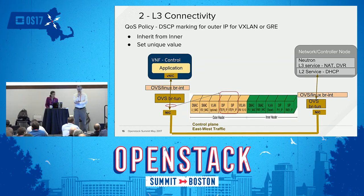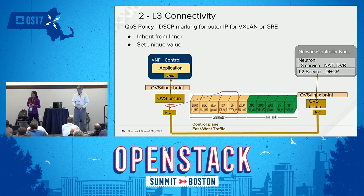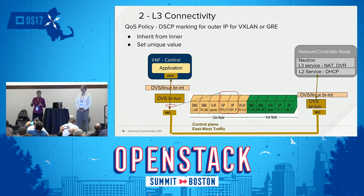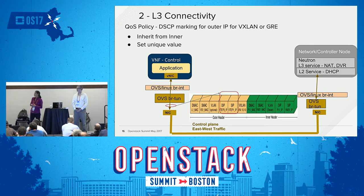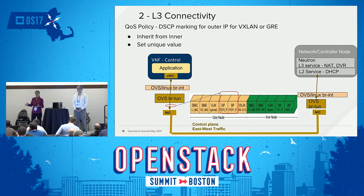Regarding L3 connectivity and QoS policy — also added in Newton — you can set your TOS or DSCP markings. This works well for a single IP tag, but when running VXLAN or GRE with an outer and inner IP tag, we currently don't have the capability to inherit from the inner tag or set a unique value for the inner. This is a work in progress; it's supported in OVS but needs to be added to Neutron.